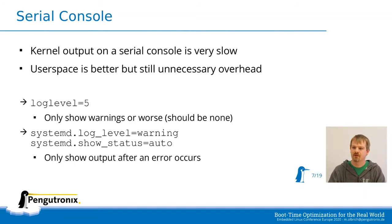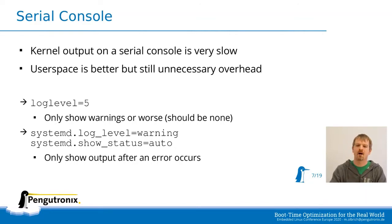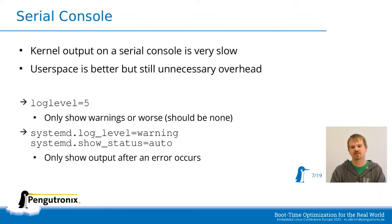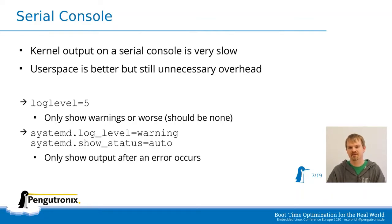There is also systemd.show_status=auto. If we set it to auto, it will not print the typical systemd messages — the ones with the green OK scrolling by at the beginning — unless an error occurs. At that point systemd switches to verbose mode and prints all following messages. So if no error occurs, we have no output, basically the same effect as quiet but only in the good case. This means we can keep this active during development so we don't have a different setup.